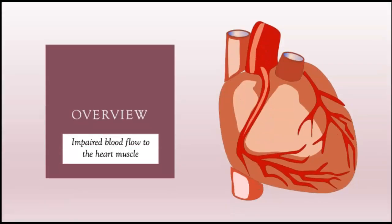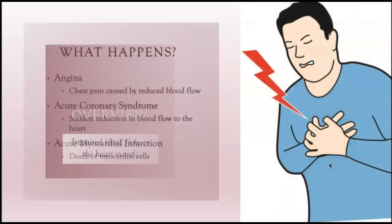Looking at the image of the heart, notice the arteries that are feeding the heart muscles. These arteries are feeding the heart muscle itself — the myocardium. The heart muscle receives blood which contains oxygen, electrolytes, and nutrients to support heart muscle contraction. If we have impaired blood flow to the heart, the heart muscle is not going to perform the way it should. Very often, the first sign of coronary artery disease is a heart attack or angina.